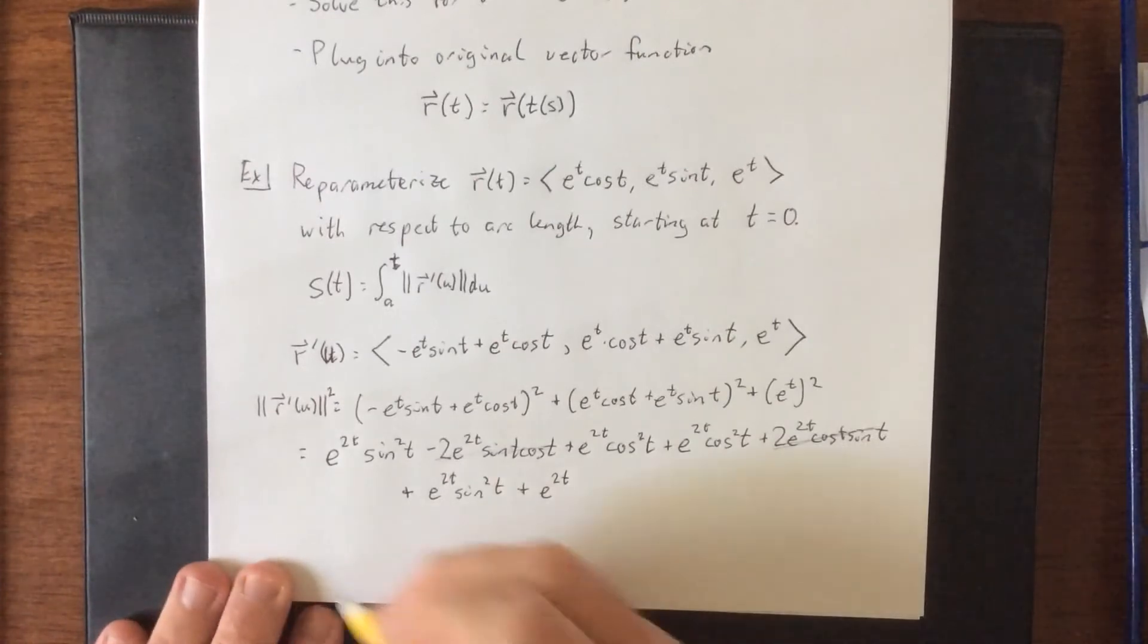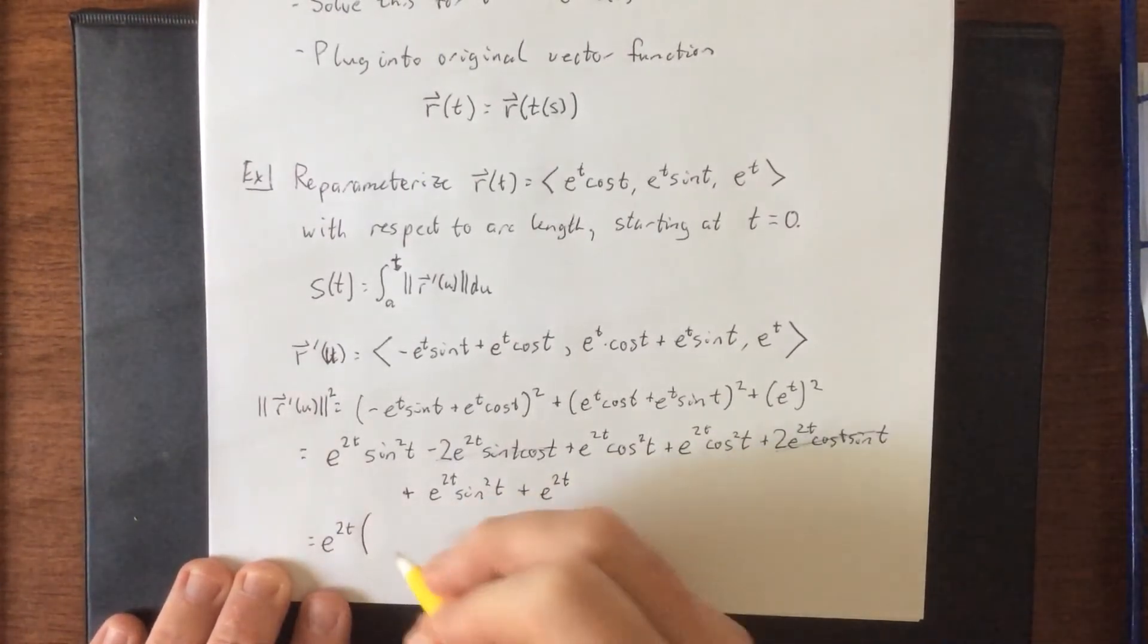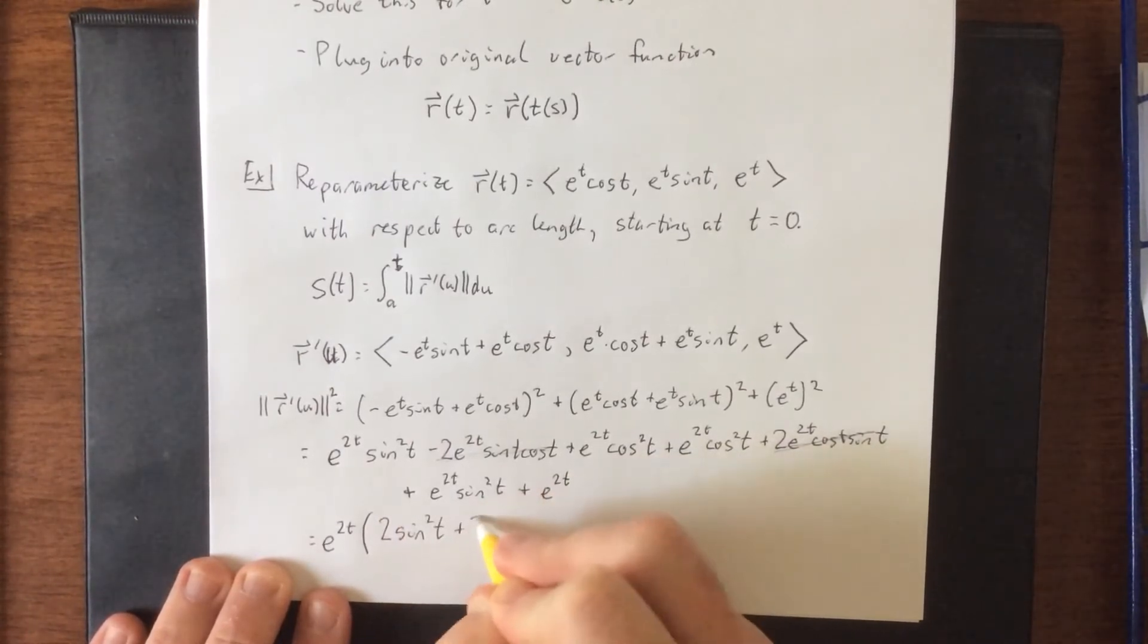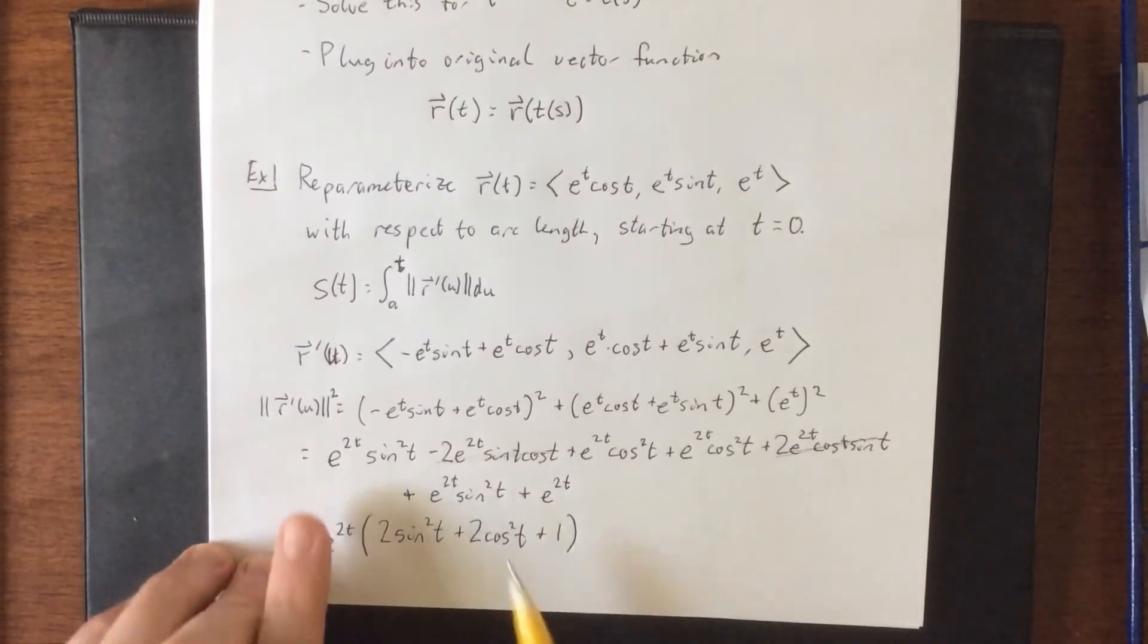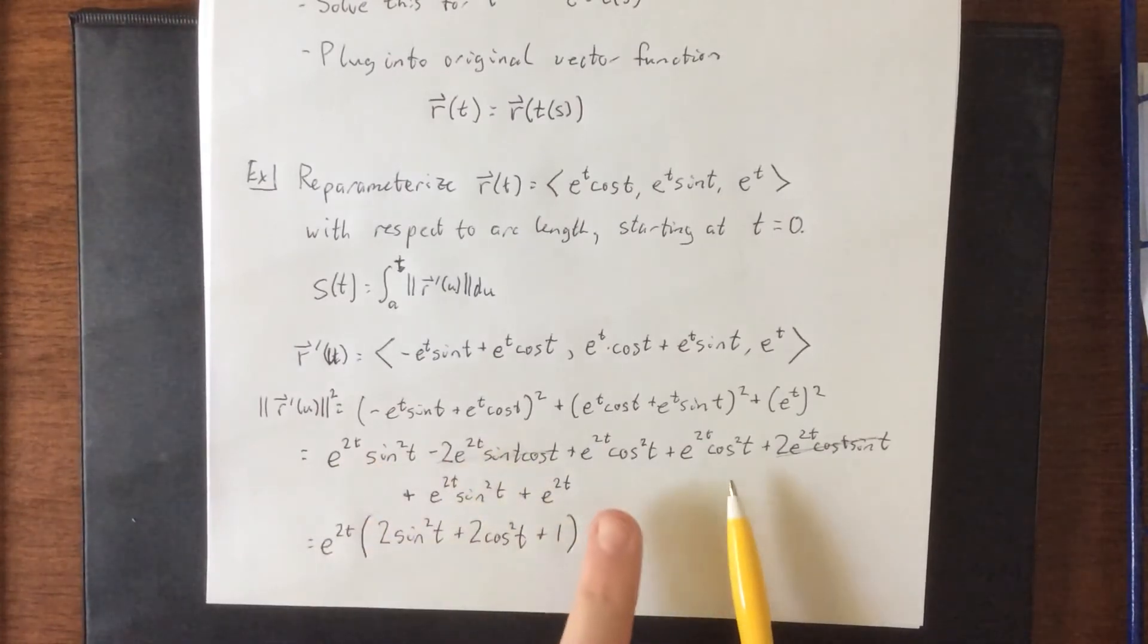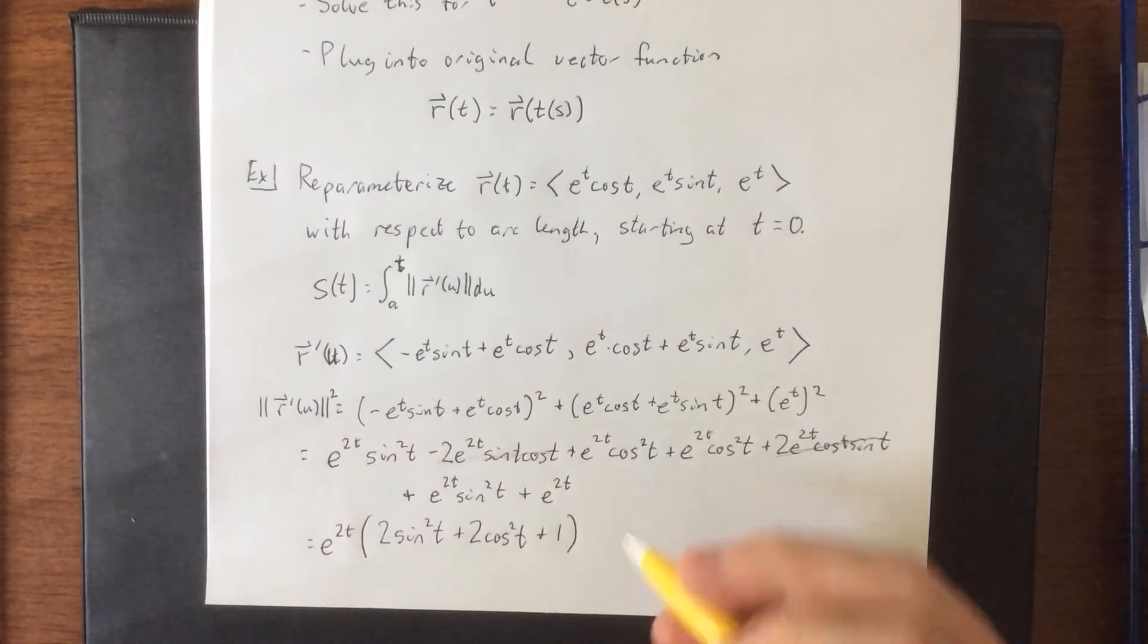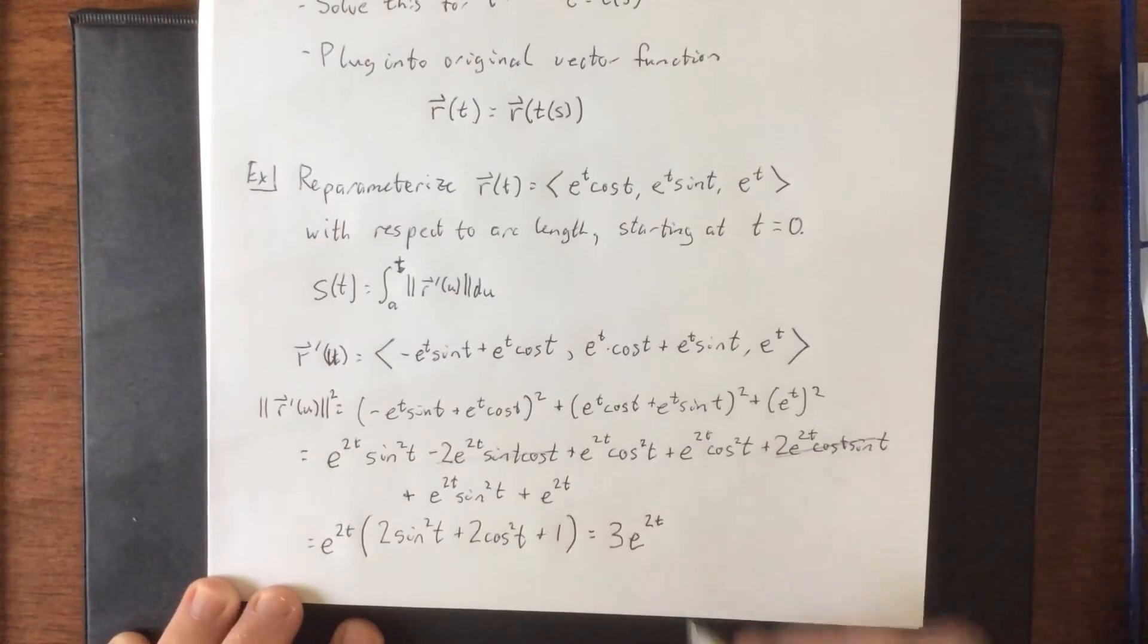In fact, if we were to just factor out our e to the two t, which really should be e to the two u, we're gonna have two sine squared t plus two cosine squared t plus one. So the two sine squared t comes from these two terms, the two cosine squared t comes from these two terms, and the one comes from this one term. So put it all together, and we have a total of three e to the two t.